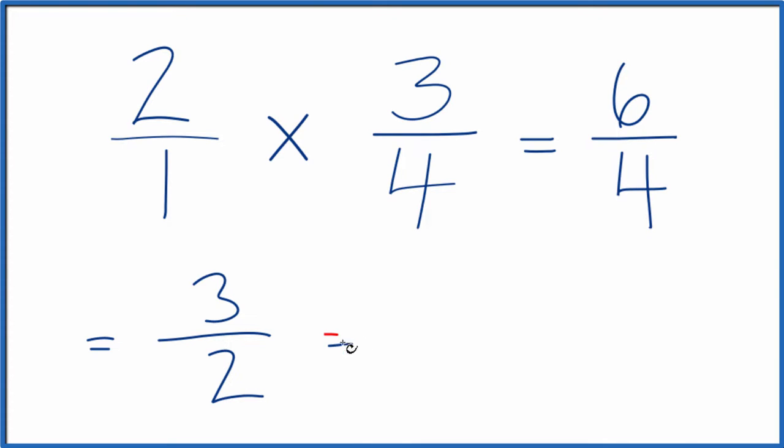And if you want to have a mixed number, 2 goes into 3 one time with 1 left over. So we call it 1 and 1 half.